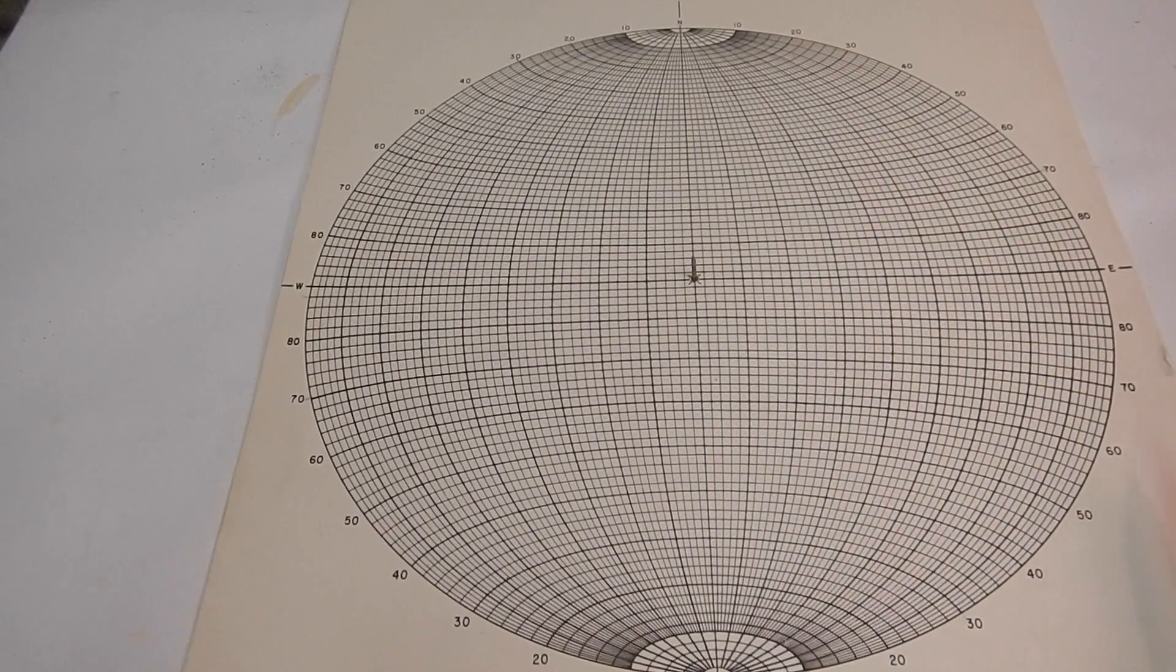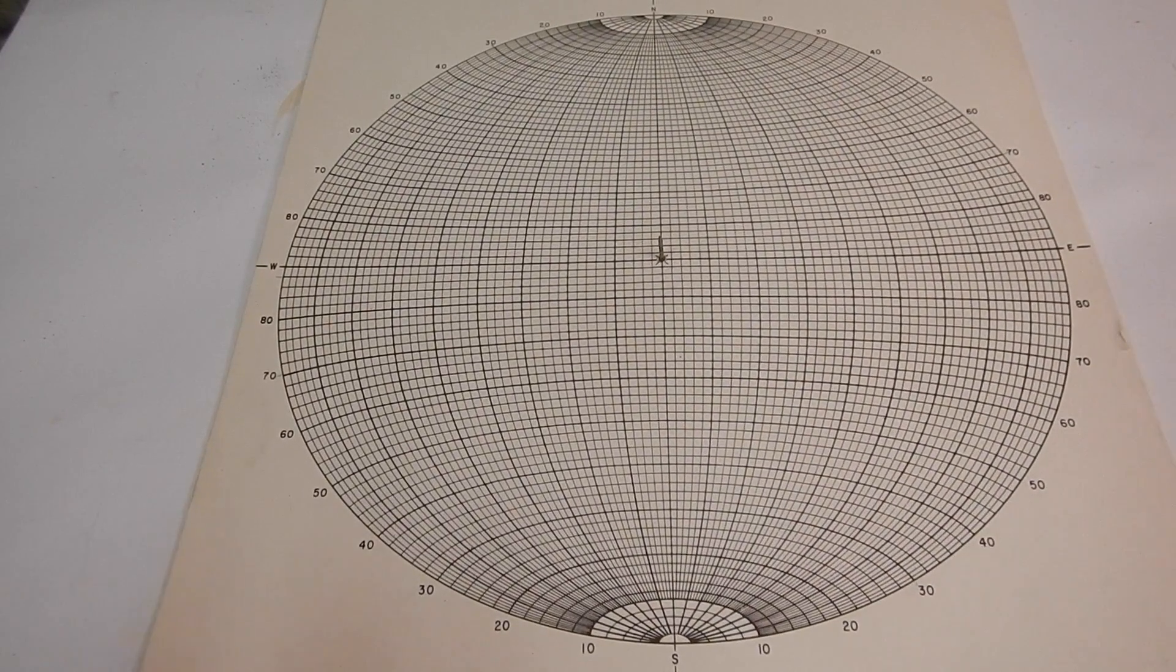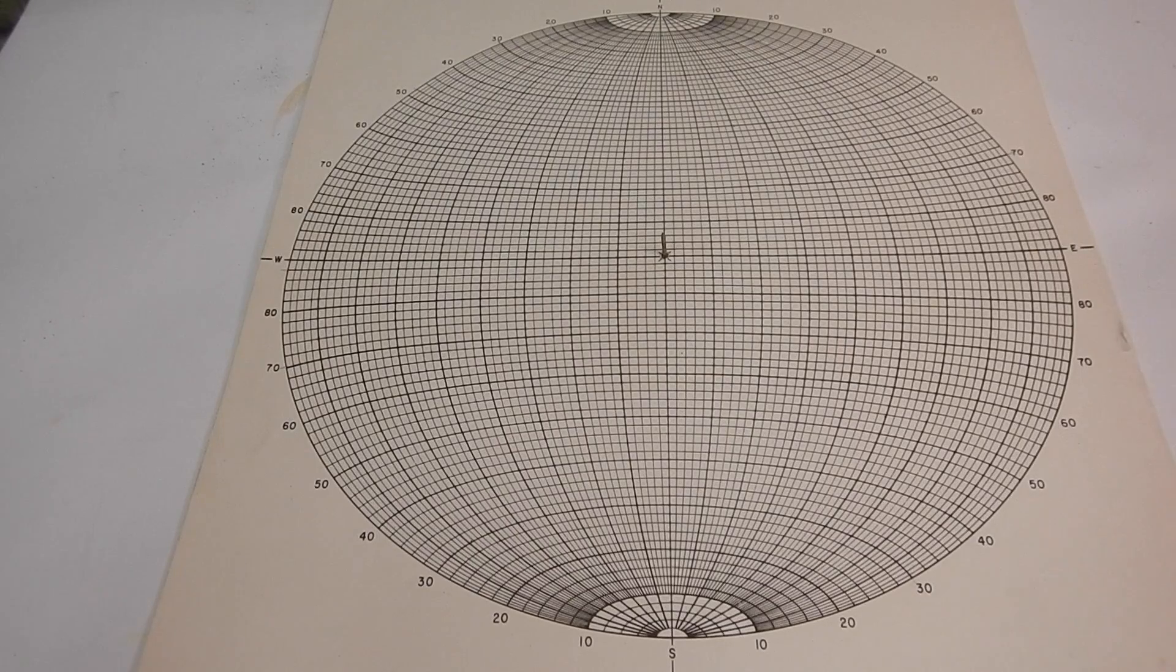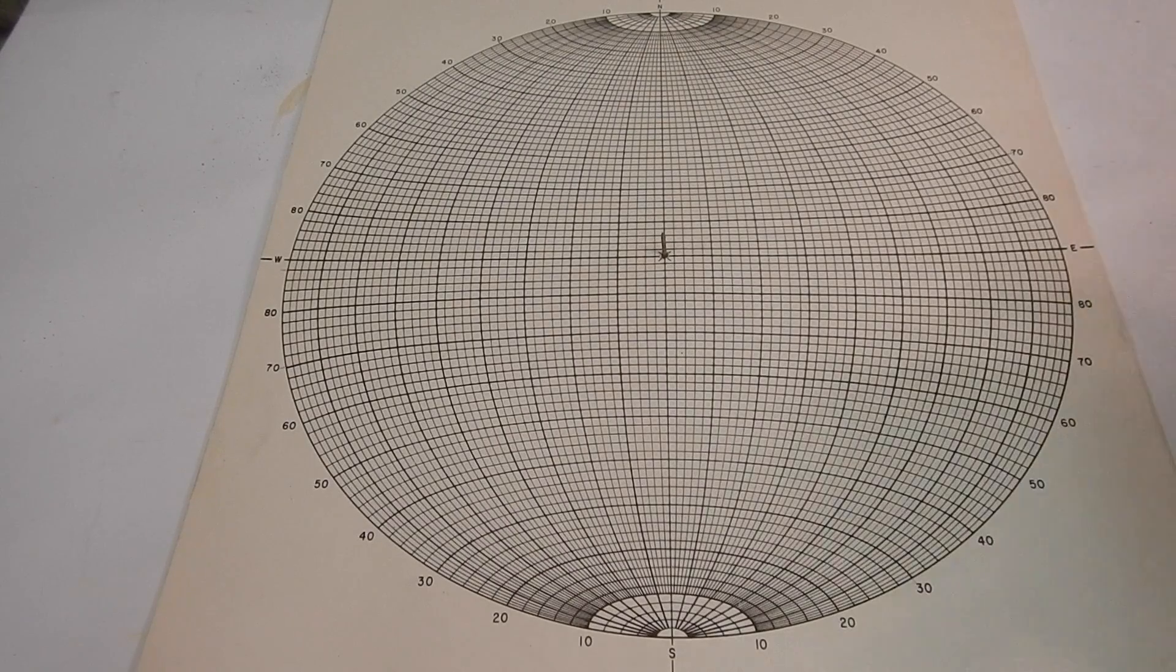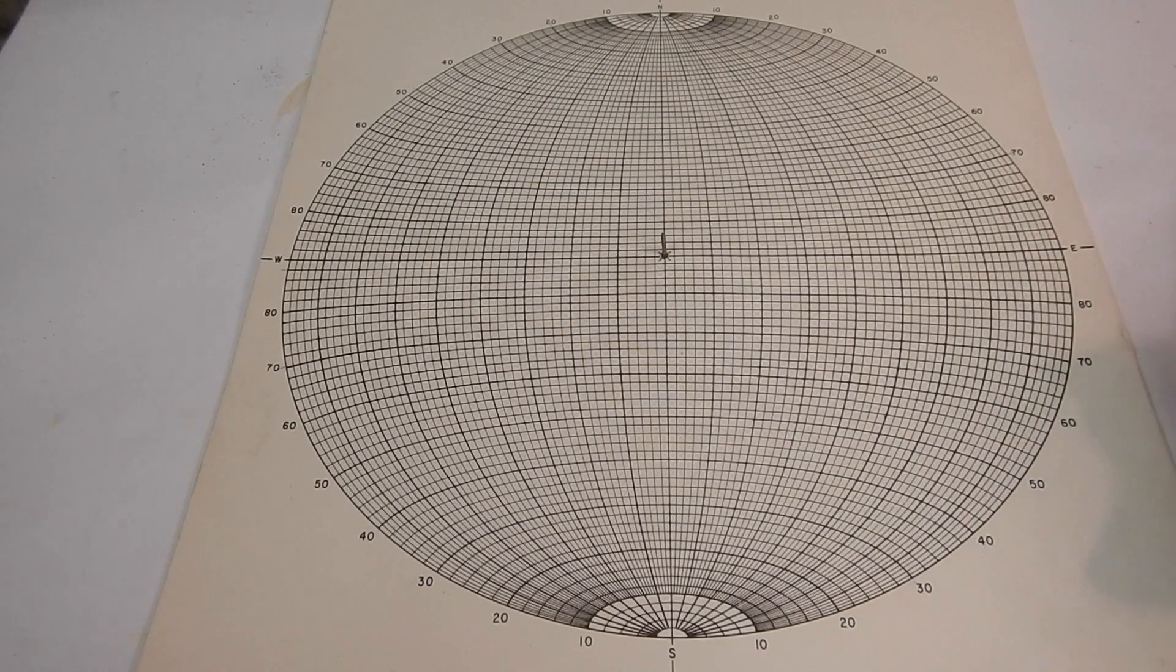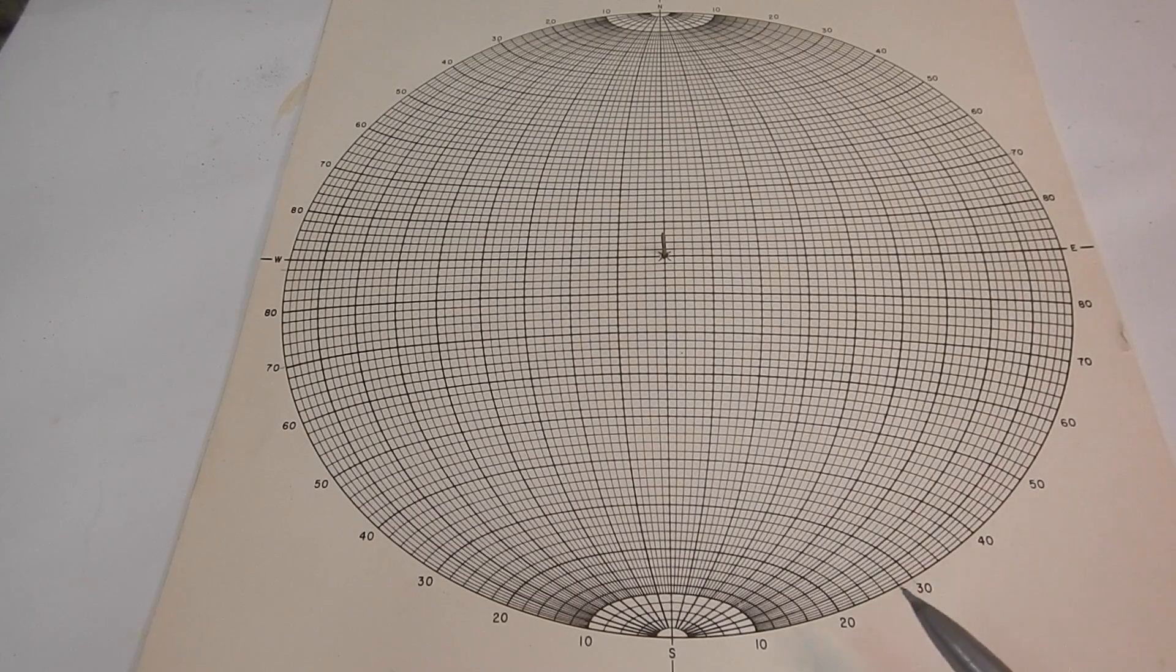So remember if you're out in the field with a quadrant Brunton compass and you had a, let's say azimuth strike of, so here's 180, we'll say 160. You would say in quadrant south 20 east, south degrees 20 degrees to the east.